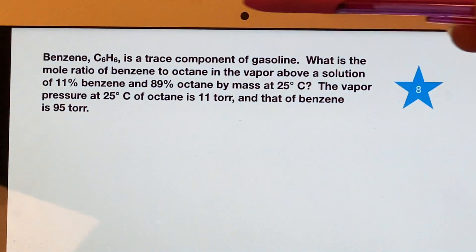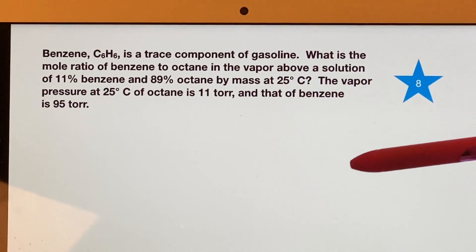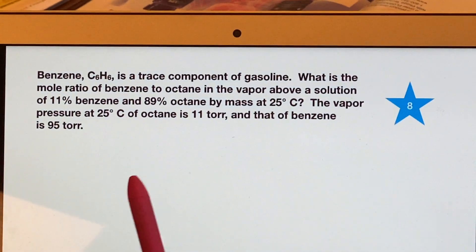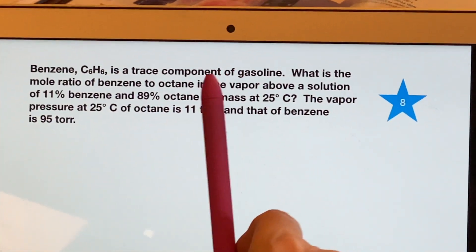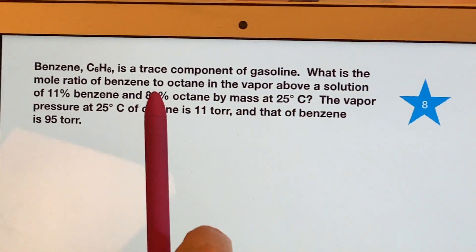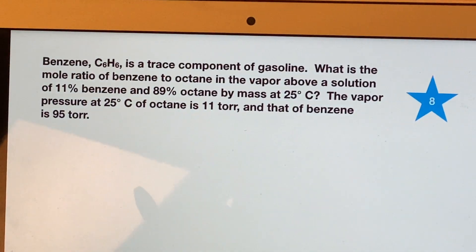Benzene can be found in gasoline. It wants to know what's the mole ratio of benzene to octane in the vapor above a solution that is 11% benzene and 89% octane by mass.